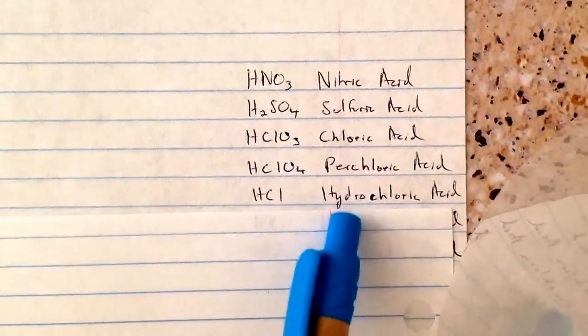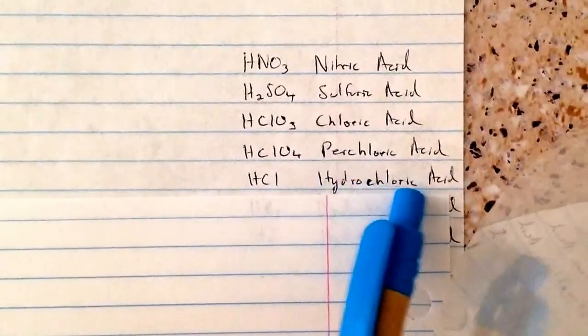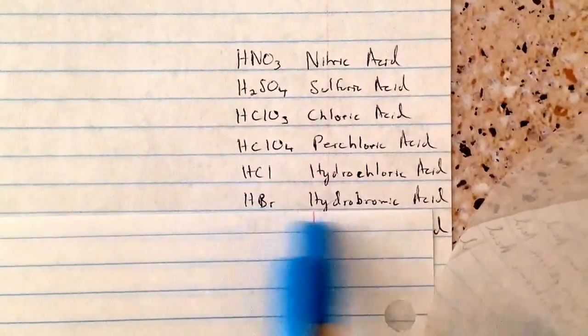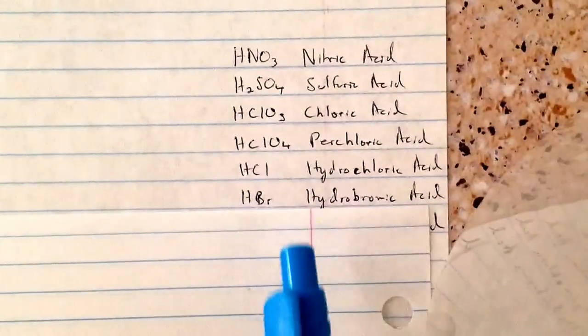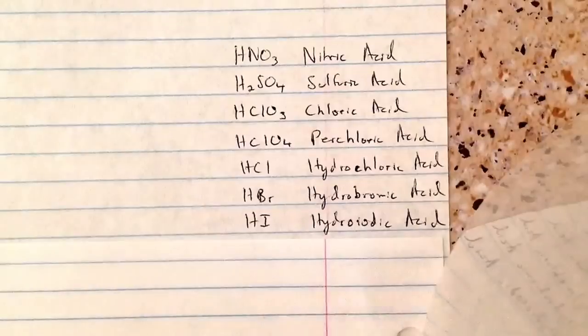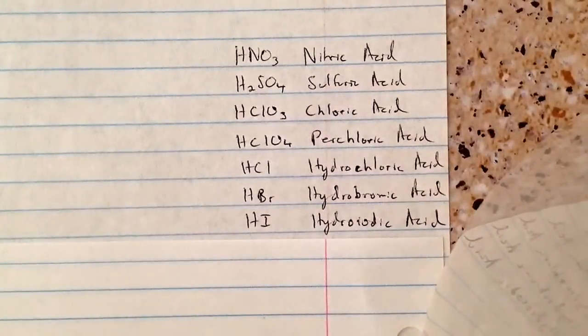After that, it just follows this hydro pattern. You look at the next element, and it's bromine, so it's hydrobromic acid. And then finally, it's I for iodine, so it's hydroiodic acid. That's how you memorize these strong acids.